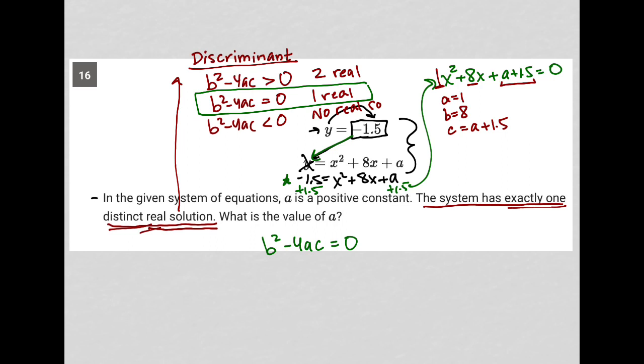So I'm going to plug that stuff down into my discriminant. So b squared would become 8 squared, minus 4 times a, which is just 1, times c, which is a plus 1.5, is equal to zero.